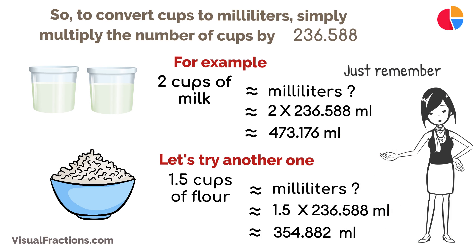Just remember, one cup equals about 236.588 milliliters. With this conversion, you can easily switch between cups and milliliters, ensuring your cooking and baking measurements are precise and accurate.